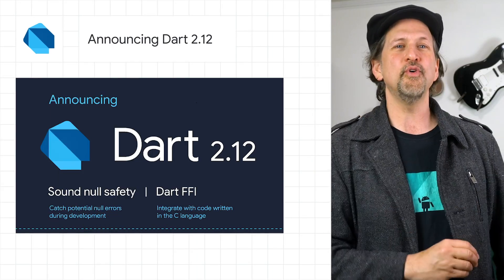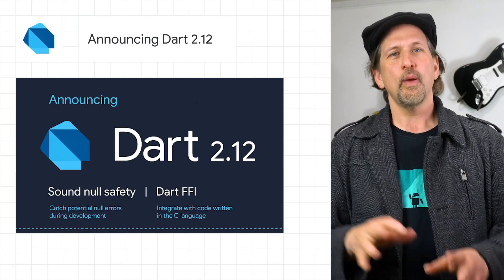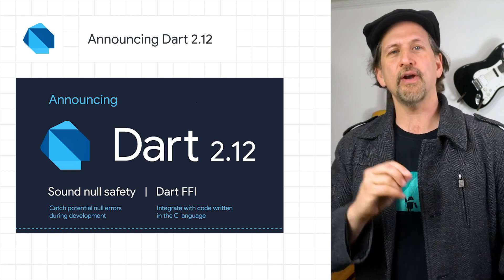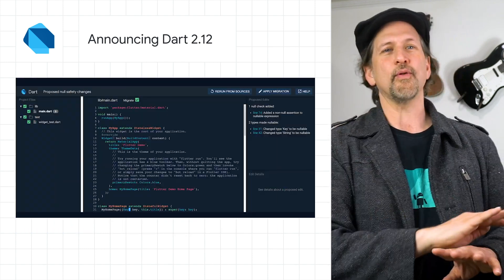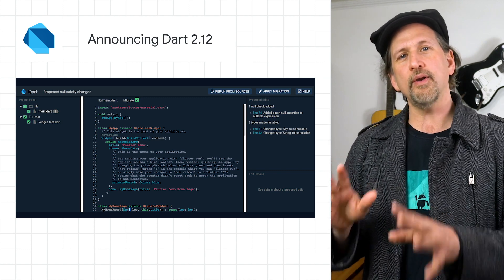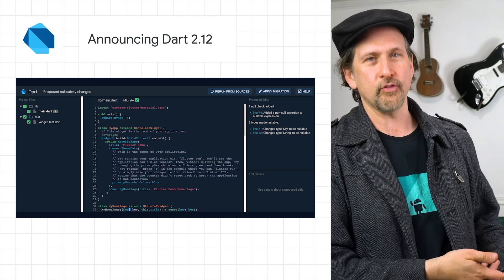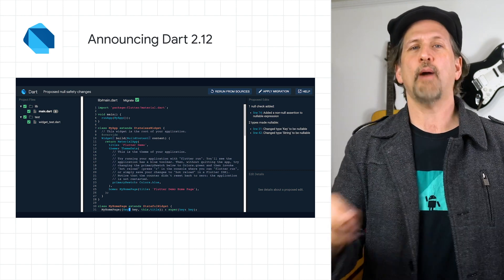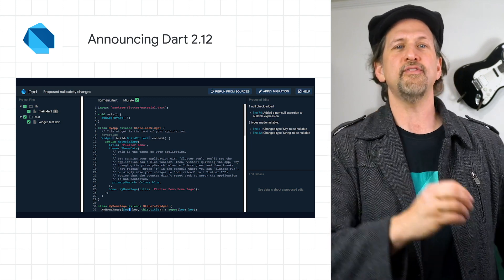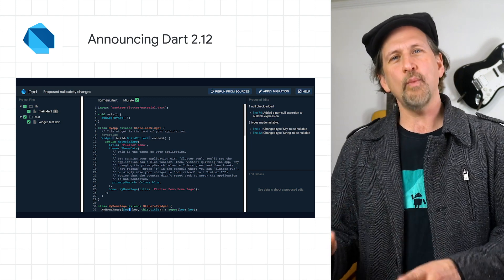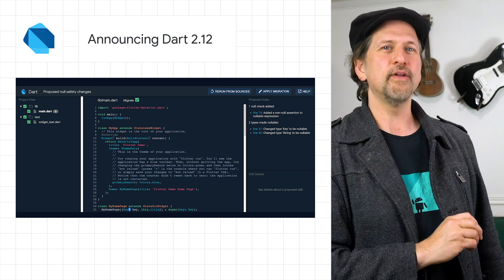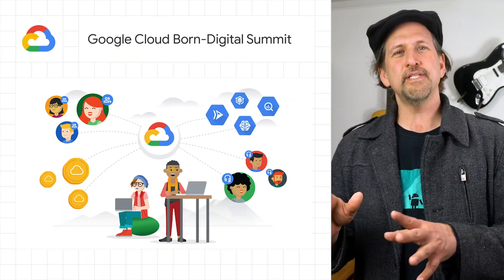Along with Flutter 2, we released Dart 2.12, which features stable versions of sound null safety and Dart FFI. Null safety is our latest major productivity feature, intended to help you avoid null errors, a class of bugs that are often hard to spot, while FFI is an interoperability mechanism that lets you invoke existing code written in the C programming language, such as calling Win32 APIs on Windows. Head on over to the post to learn more.